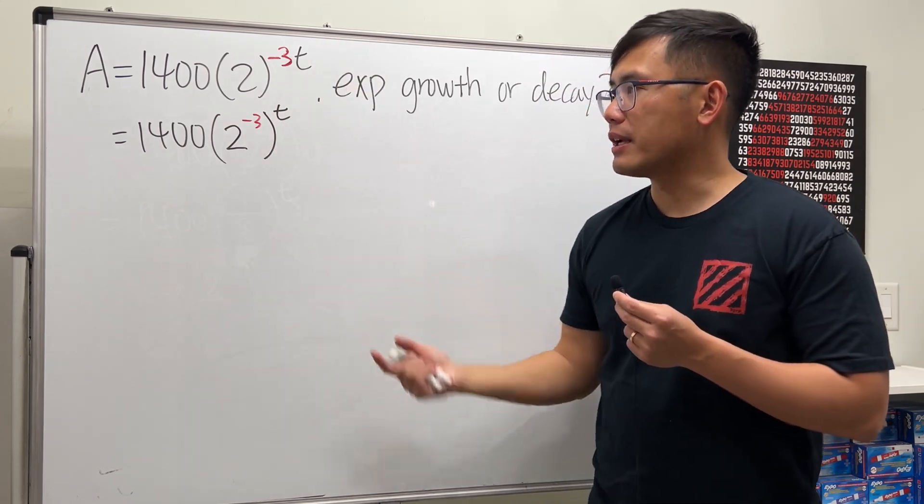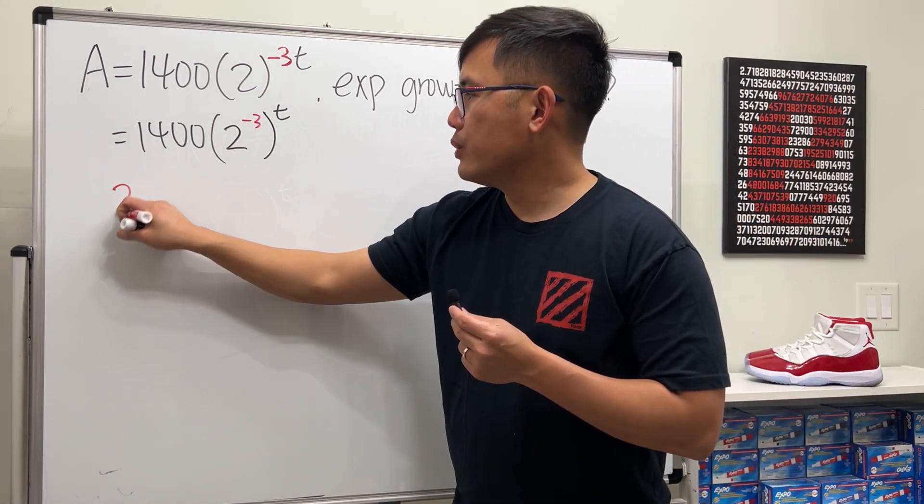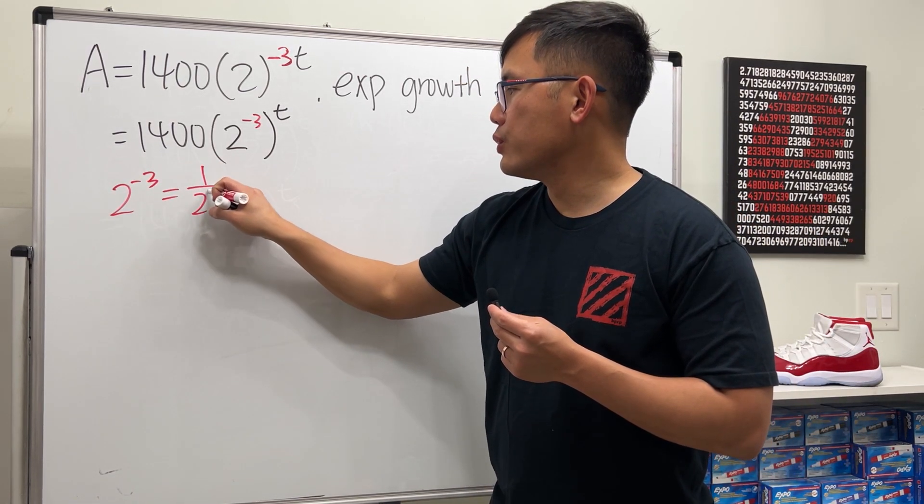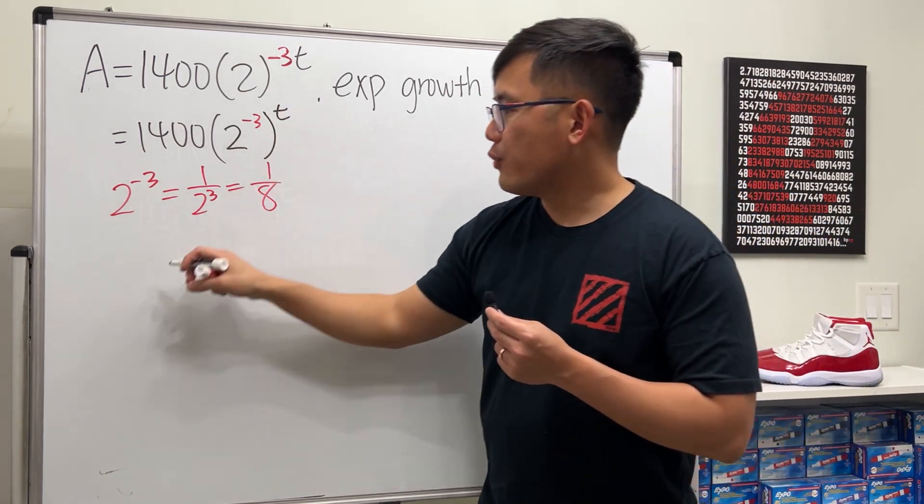Now what's 2^(-3)? Well, 2^(-3) is just 1/2^3, which is just 1/8.